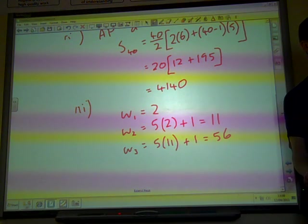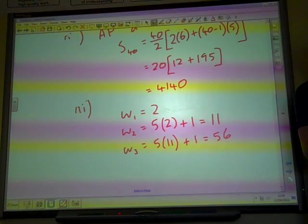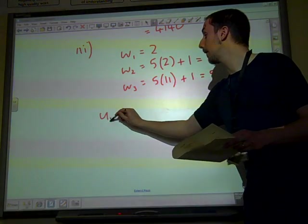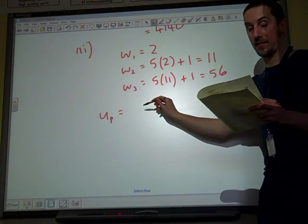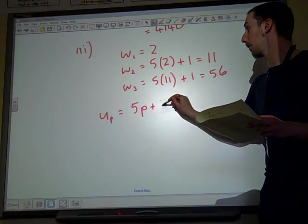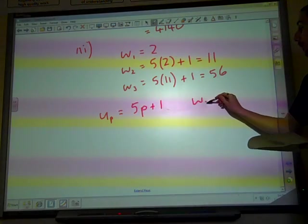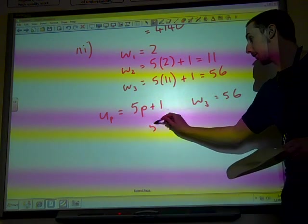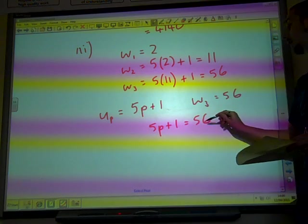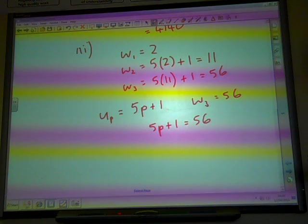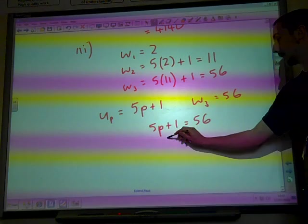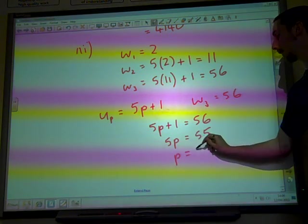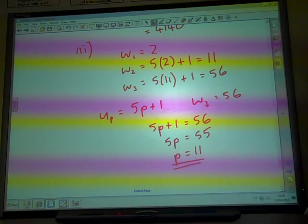And the question said find the value of P so that UP equals W3. Well, UP is 5P plus 1 and W3 is 56. So we want to know when is 5P plus 1 equal to 56. So P equals 11. And we've done it.